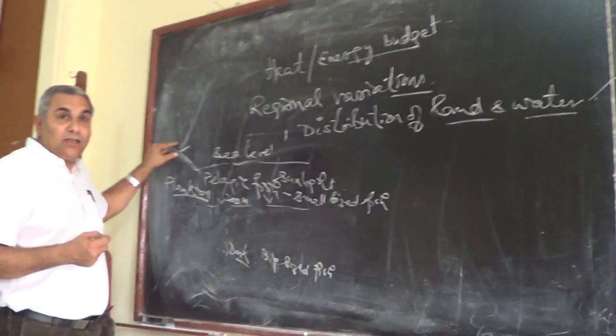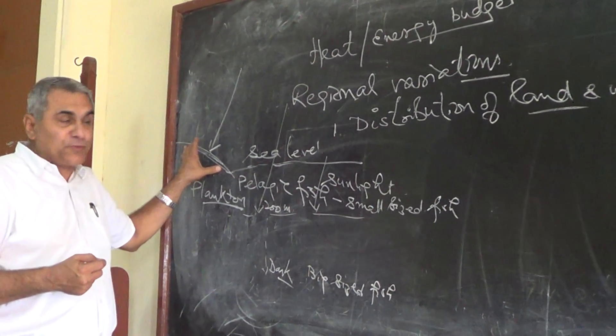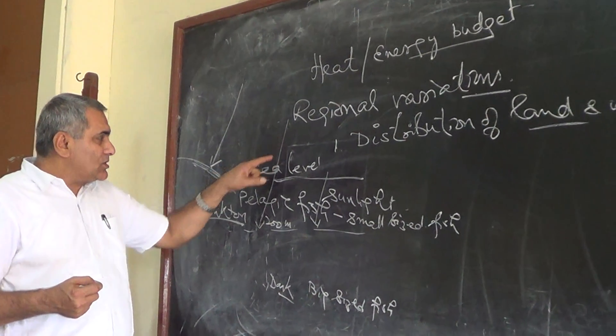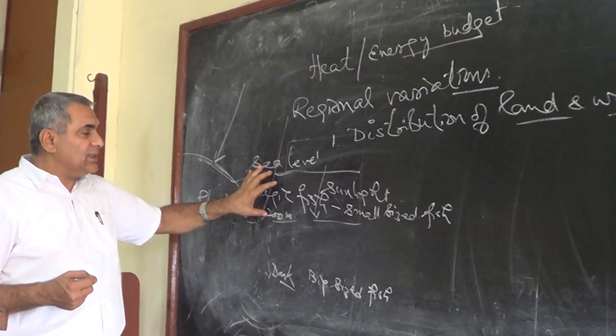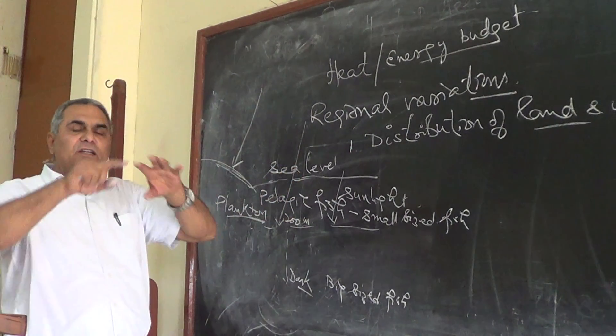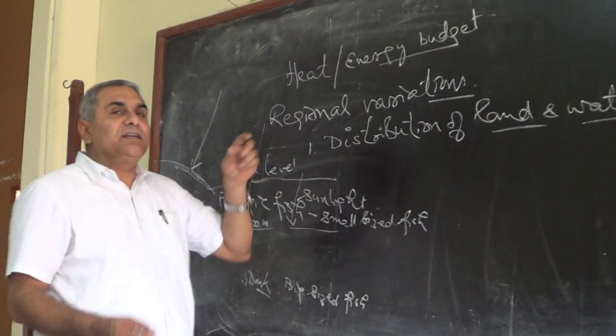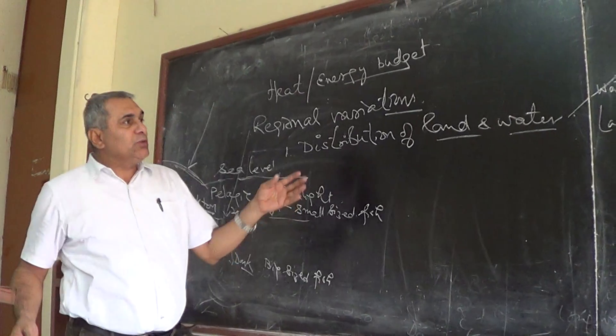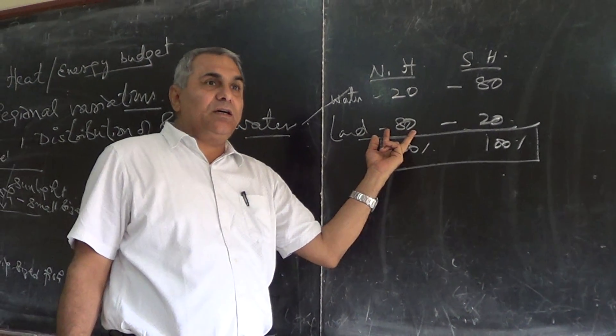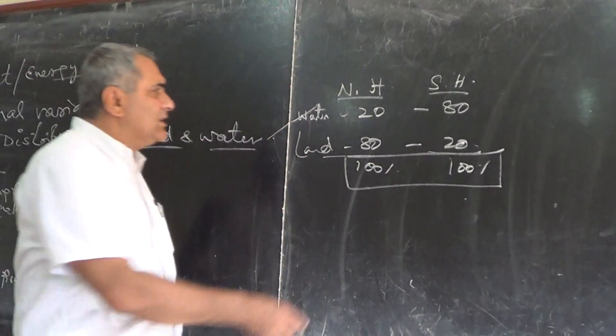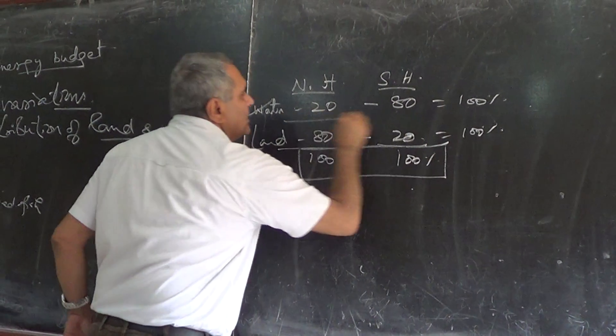There's more reflectance and more absorption of temperature on land. Earth has more reflectance and more absorption - it absorbs more. Water reflects more, so heat will be stored on land. On water, heat is not as apparent. This is the first factor of regional variation in heat budget across the earth. In the southern hemisphere we have water, while in the northern hemisphere we have only 20% water and 80% land.